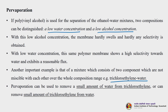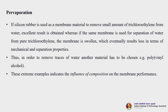In a mixture of two components, you can selectively remove either one. If silicone rubber is used as a membrane material to remove small amounts of trichloroethylene from water, excellent results are obtained. Whereas if the same membrane is used for separation of water from pure trichloroethylene, the membrane swells, eventually resulting in loss of mechanical and separation properties. To remove traces of water, another material such as polyvinyl alcohol has to be chosen. These extreme examples indicate the influence of composition on pervaporation performance.